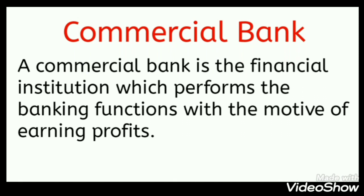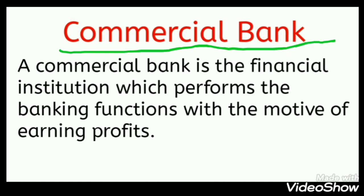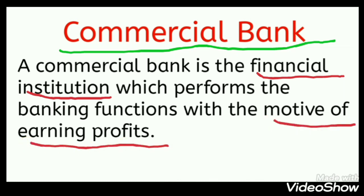In order to understand how money creation is done by commercial banks, first we should know what is meant by a commercial bank. A commercial bank is the financial institution which performs banking functions with the motive of earning profits. There can be many types of banks — industrial banks which provide loans to industrialists, agricultural banks which provide loan facilities to farmers. Commercial banks carry on banking functions with the main motive of earning profits.